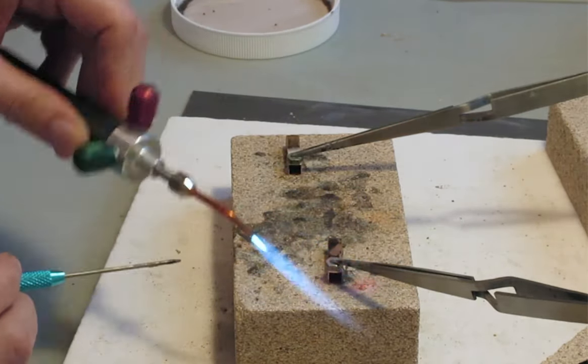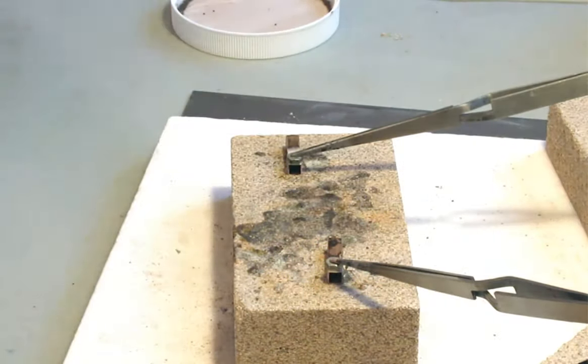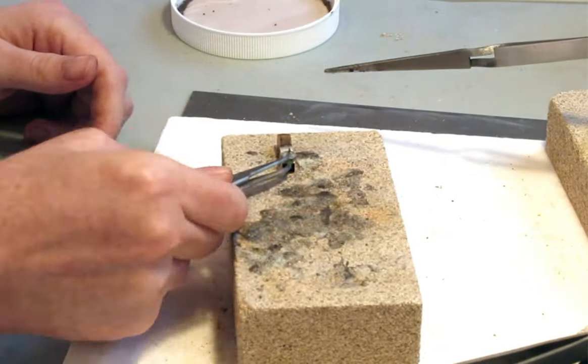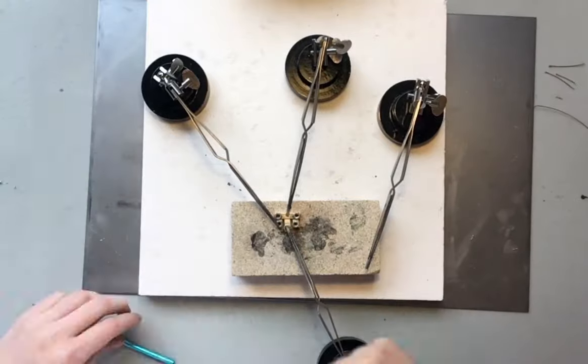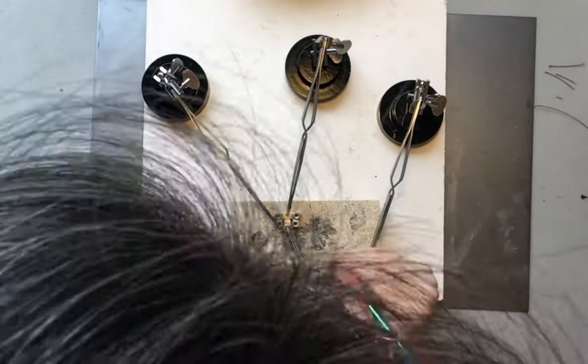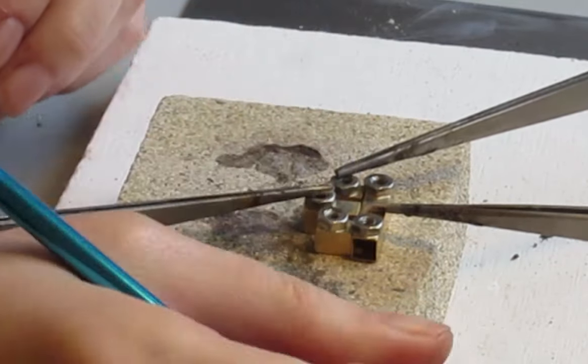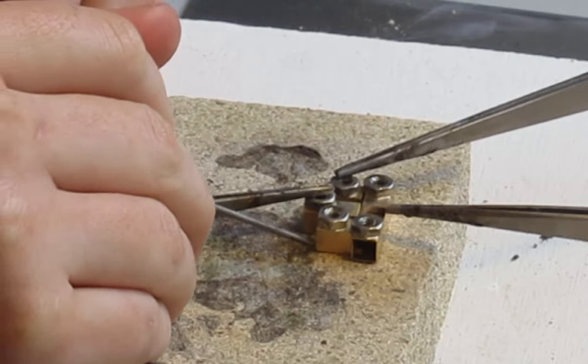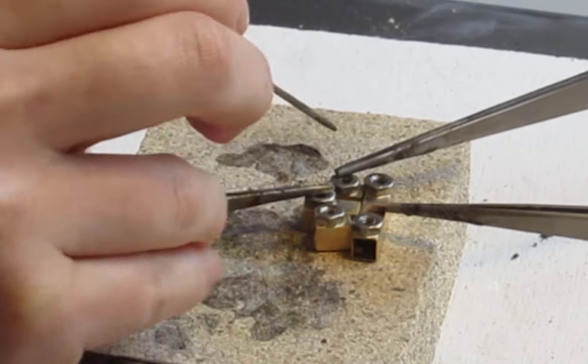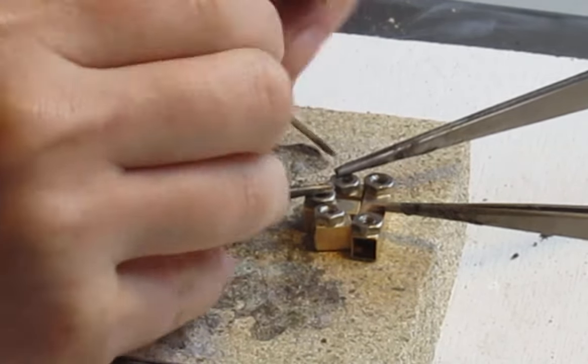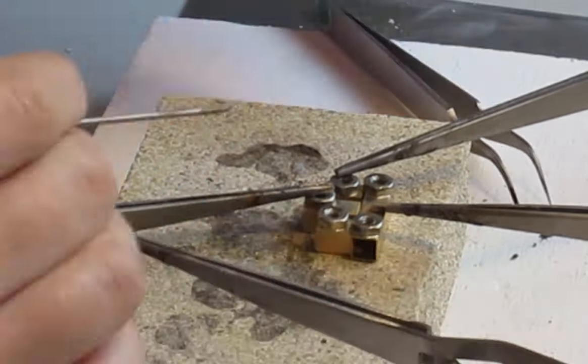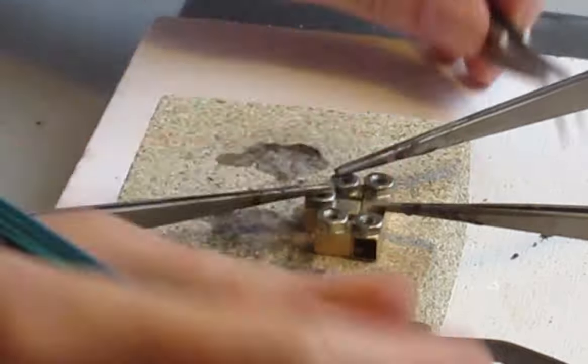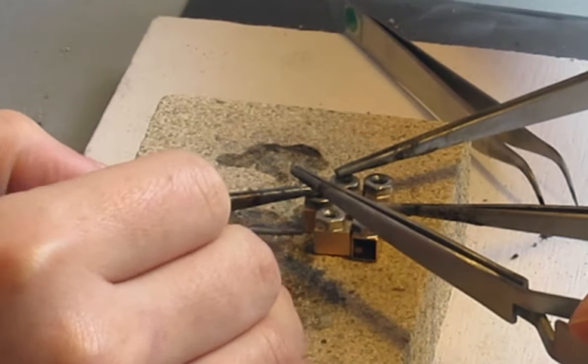You solder the nuts to all the K&S pieces, and then it is time to assemble them. Take your time getting the pieces in their proper positions, and then clamp down with helping hands.